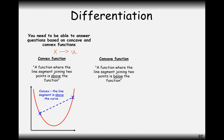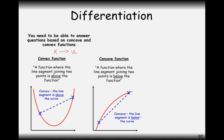For a concave function, the line segment joining the points is below the function. So if it's like an upside-down U shape — an N type shape — then it's going to be a concave shape. Convex with an X goes to a U shape, and concave with a V goes to an N type shape, so upside down.